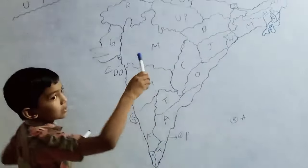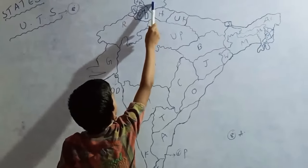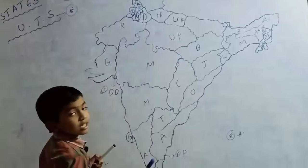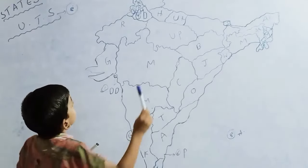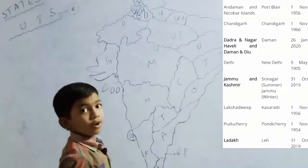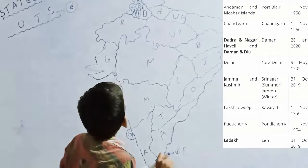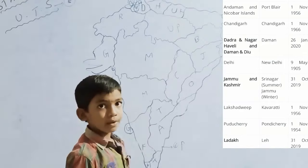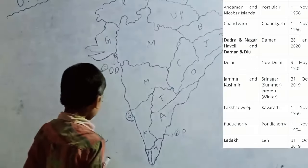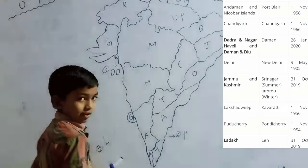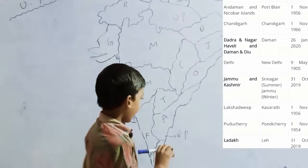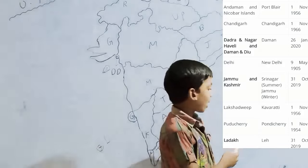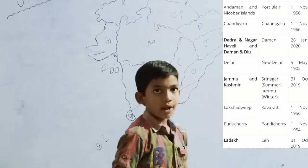We will learn the Capitals of Union Territories. First, Ladakh capital is Leh. Jammu and Kashmir, Srinagar and Jammu. National Capital of Delhi, New Delhi. And Dadra and Nagar Haveli and Daman and Diu, Daman. And Lakshadweep, Kavaratti. Puducherry, Puducherry. And the Andaman and Nicobar Islands, Port Blair.